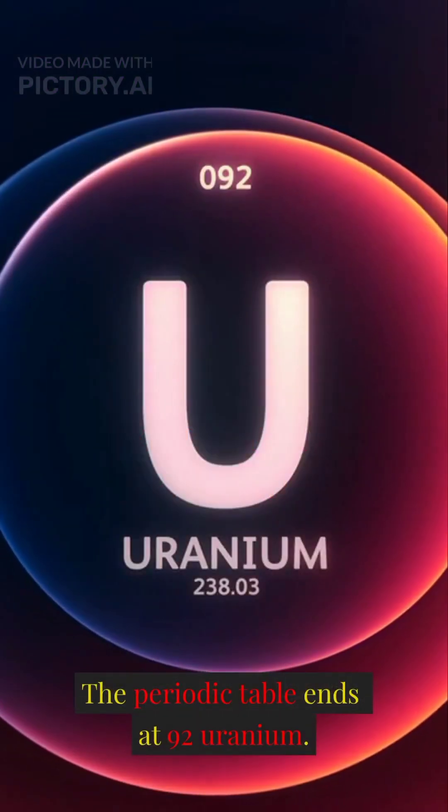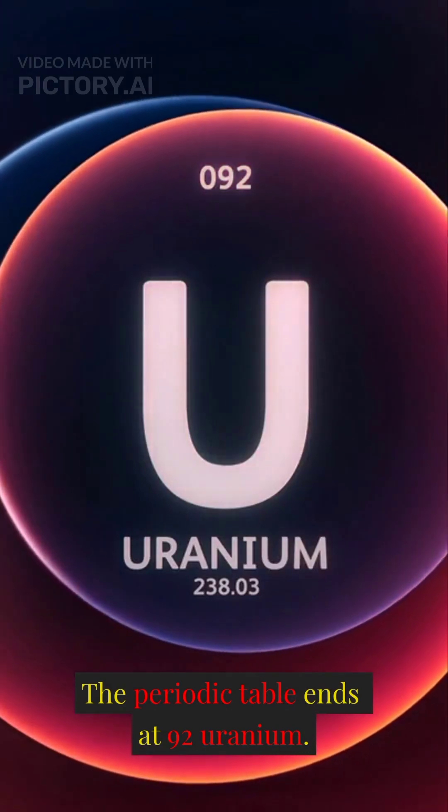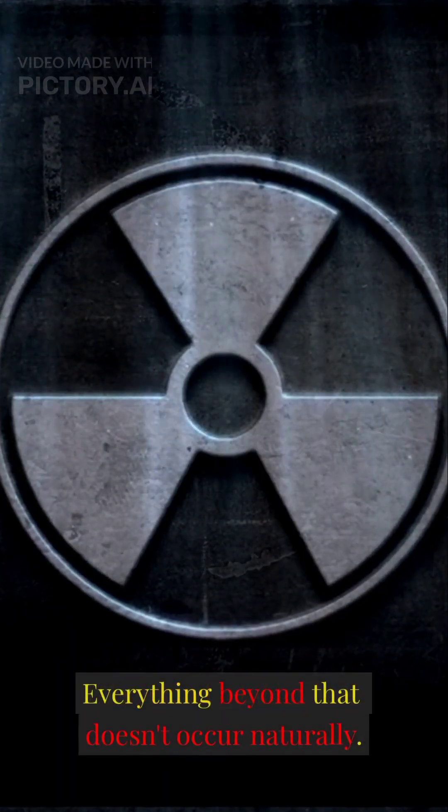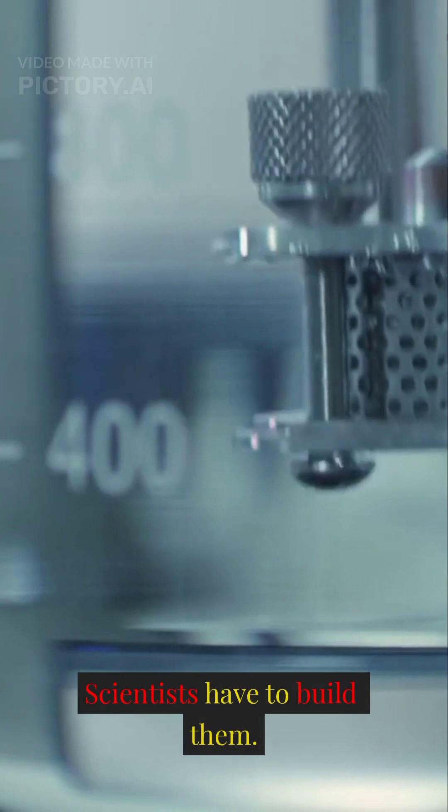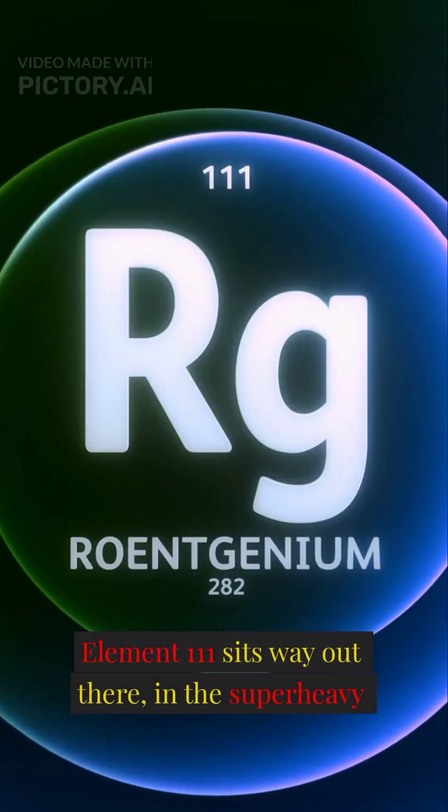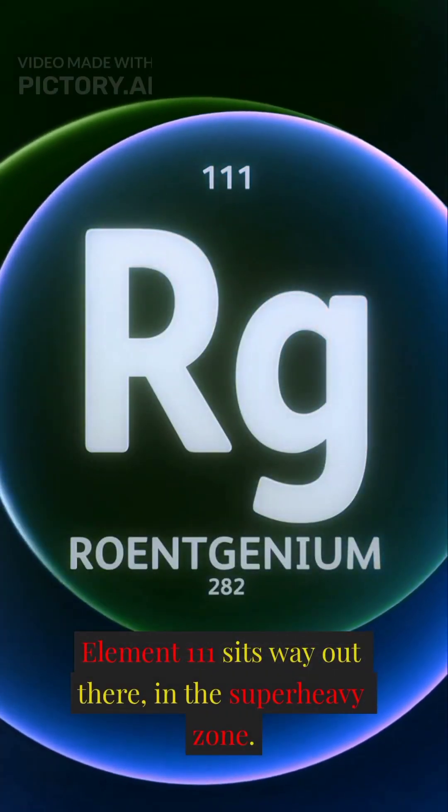The periodic table ends at 92 uranium. Everything beyond that doesn't occur naturally. Scientists have to build them. Element 111 sits way out there in the super heavy zone.